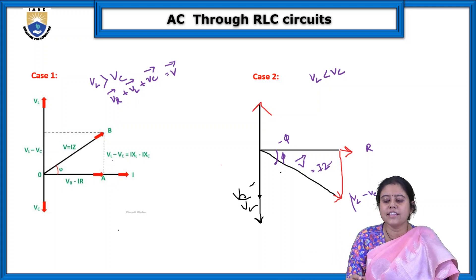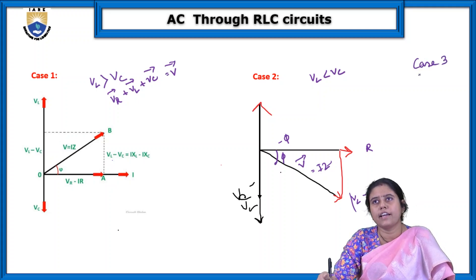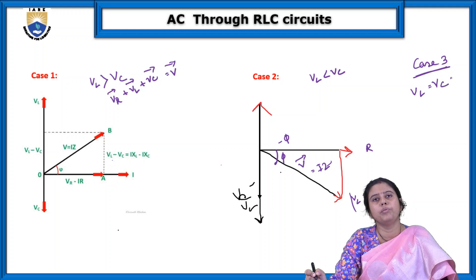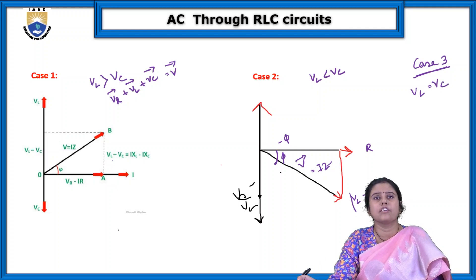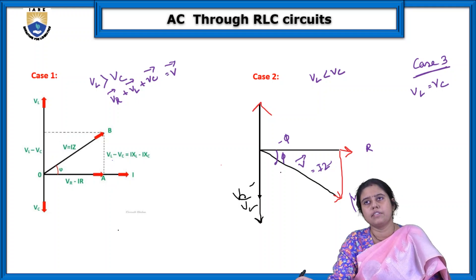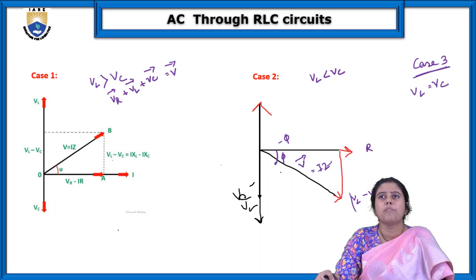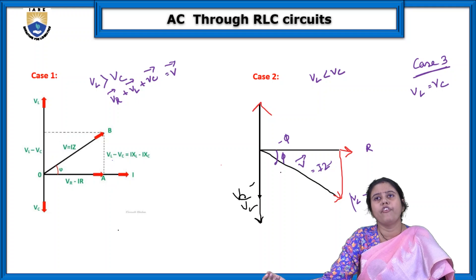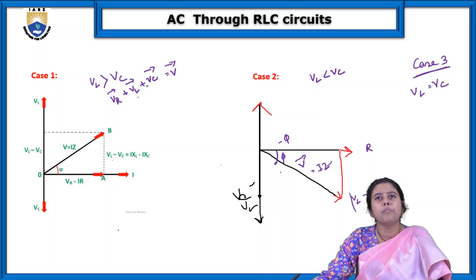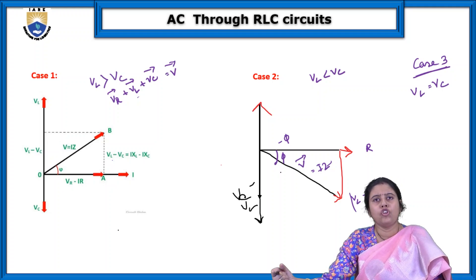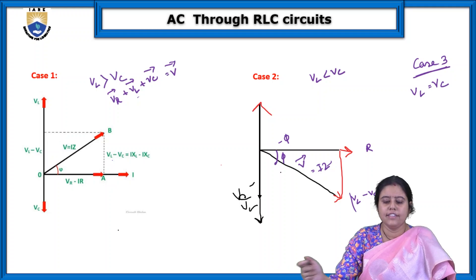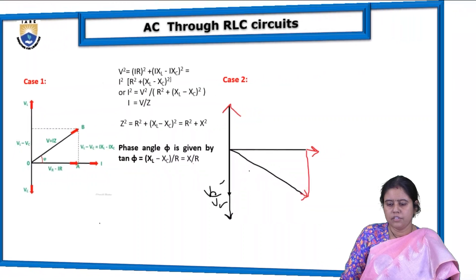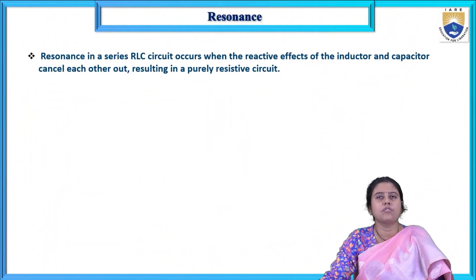Now we go to Case 3, which has not been written yet. Case 3 is when VL equals VC. What happens when the voltage across the inductor equals the voltage across the capacitor? Since they are 180 degrees opposite, VL minus VC equals zero — both will cancel each other, and the dominant voltage will be the voltage across the resistance. This is today's case — called resonance.